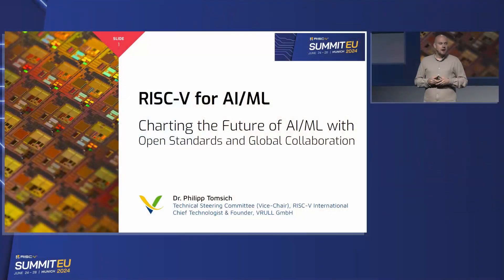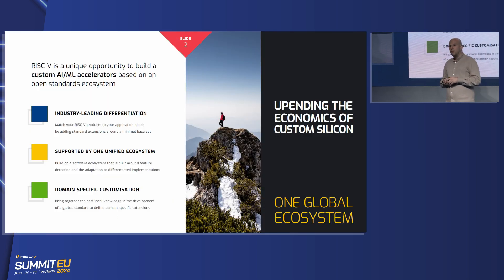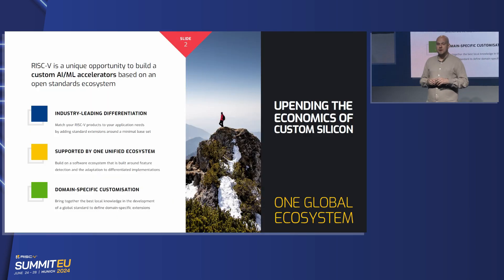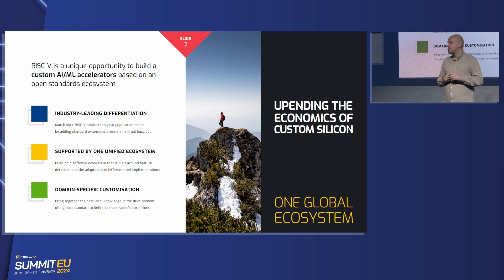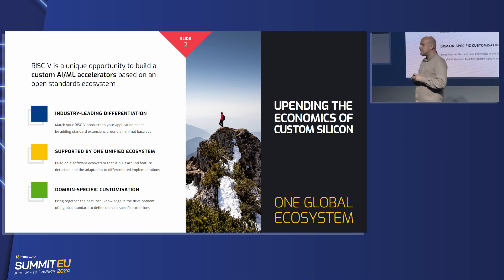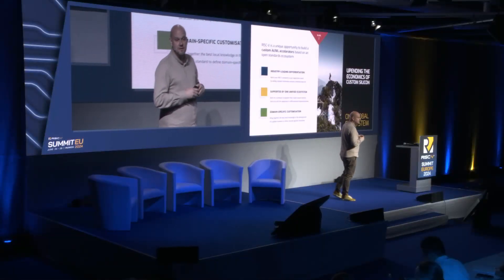My name is Philip Tomsich. I'm the Vice Chair of the Technical Steering Committee at RISC-V International, and I'm the chief technologist at Roll, which is an engineering company working to develop standards to enable them to build software ecosystems. I'm deeply grounded in software on the interface with the architecture and the microarchitecture. RISC-V is quite amazing when you're trying to target new spaces like AI/ML accelerators, because it gives us a unique approach to silicon design, to custom silicon design and ISA design.